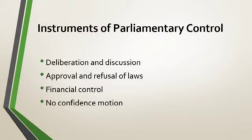Now, the instruments or methods by which Parliament can control the executive are: first, deliberation and discussion; second, approval and refusal of laws; third, financial control; and fourth, no confidence motion. We will now study all of these in detail, one by one.